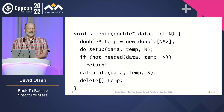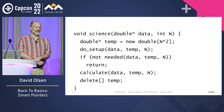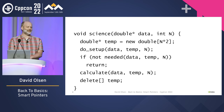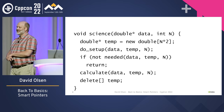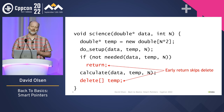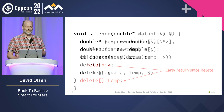So where's the bug in this code? Correct — the early return. If we take the return in the middle, we will skip over the delete at the end, and that'll be a memory leak. So where's the bug in this code?